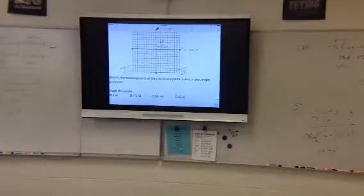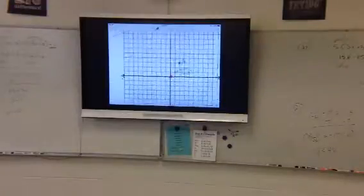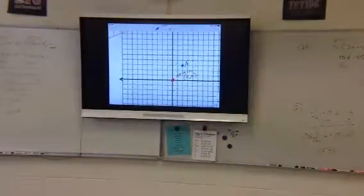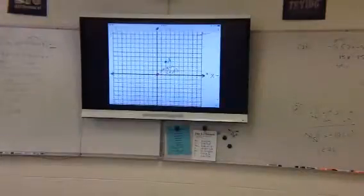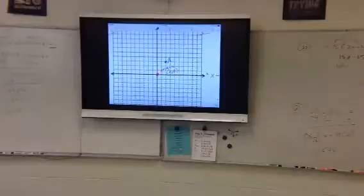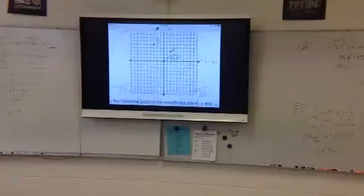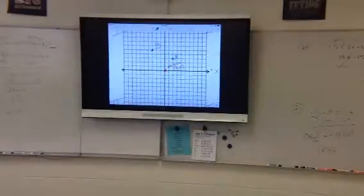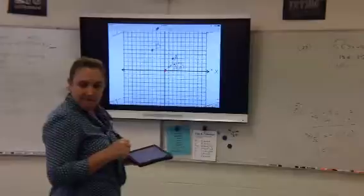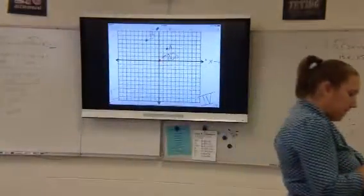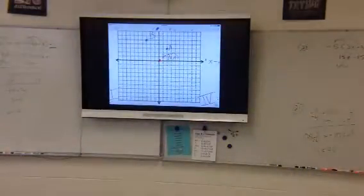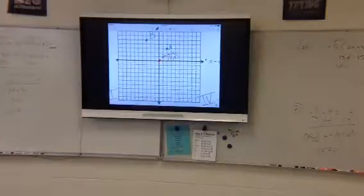Alright, negative 3, 5. John, where's the negative 3, 5 at? Negative 3, 5 would be, we should go 3 to the left, and then 5 up. Very good. So then you would have B right here. Correct. And then the next one, 4, negative 9. Link, where's 4, negative 9 at? Go to the right 4 and down 9. Okay, so down 9. Yep, right here. Okay, good. So there would be C.